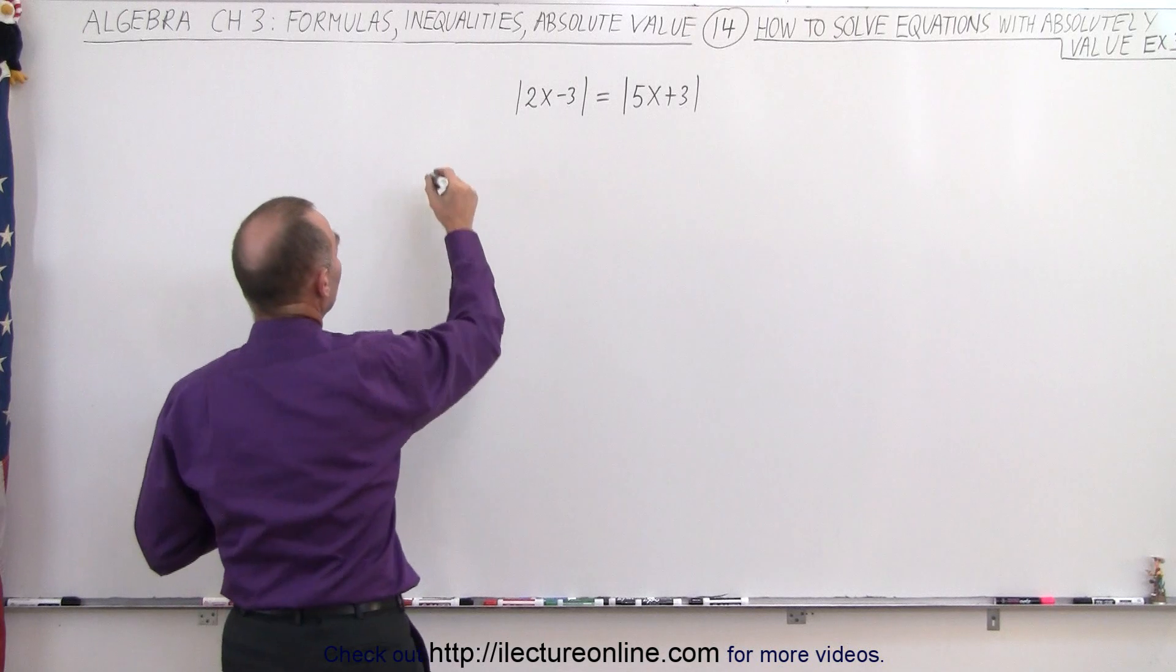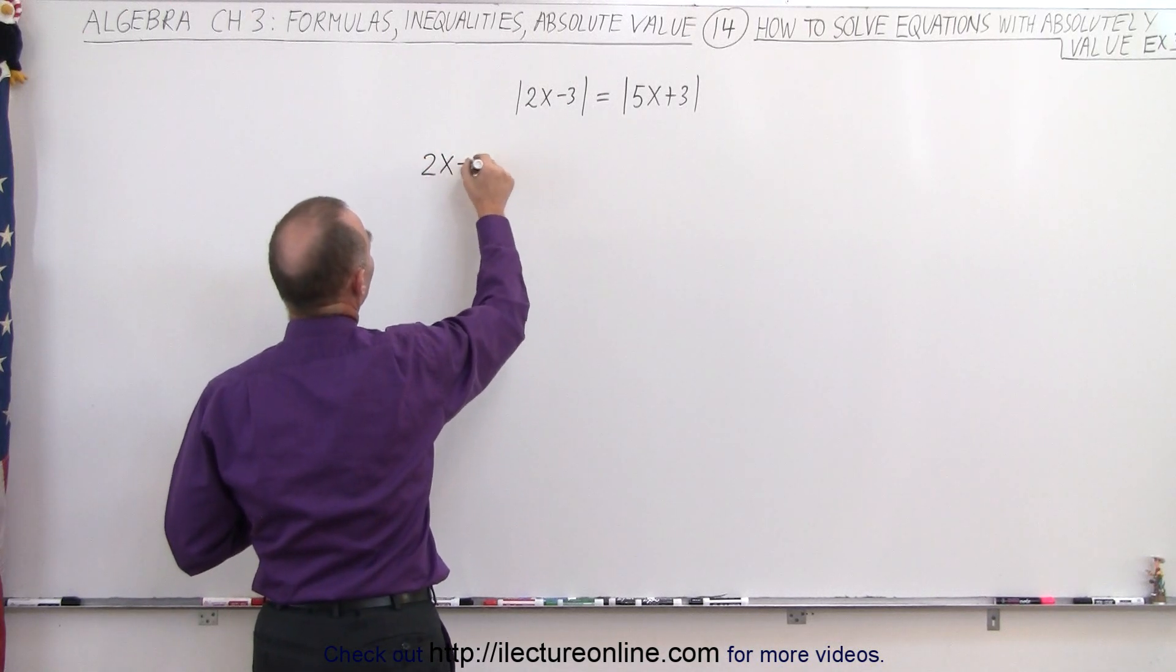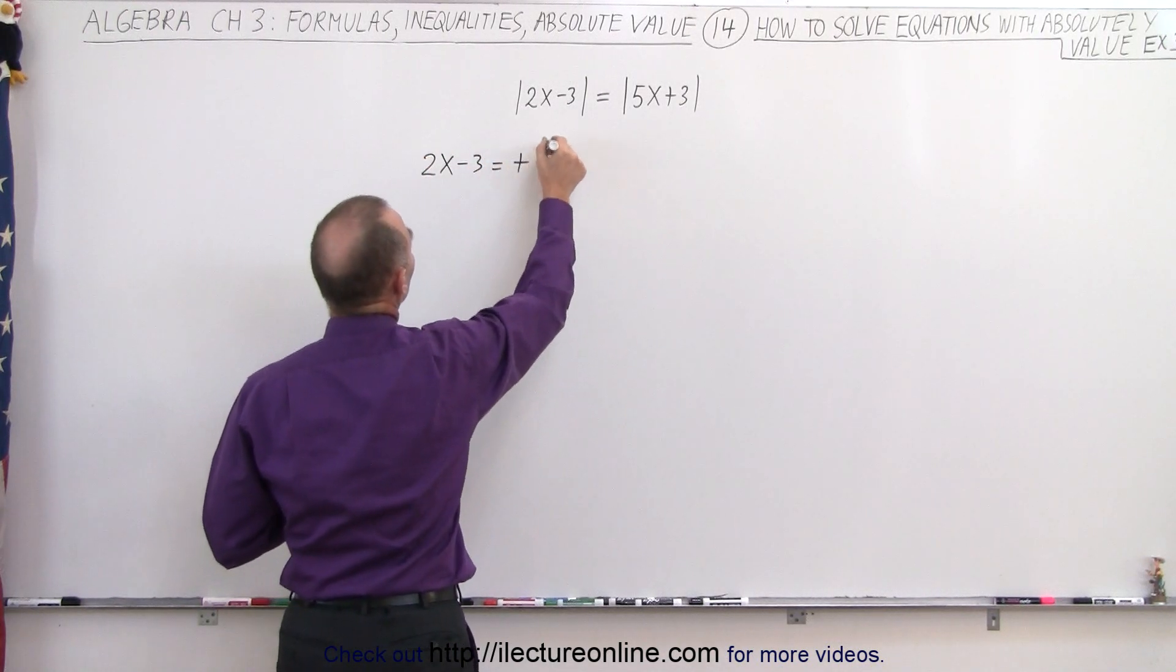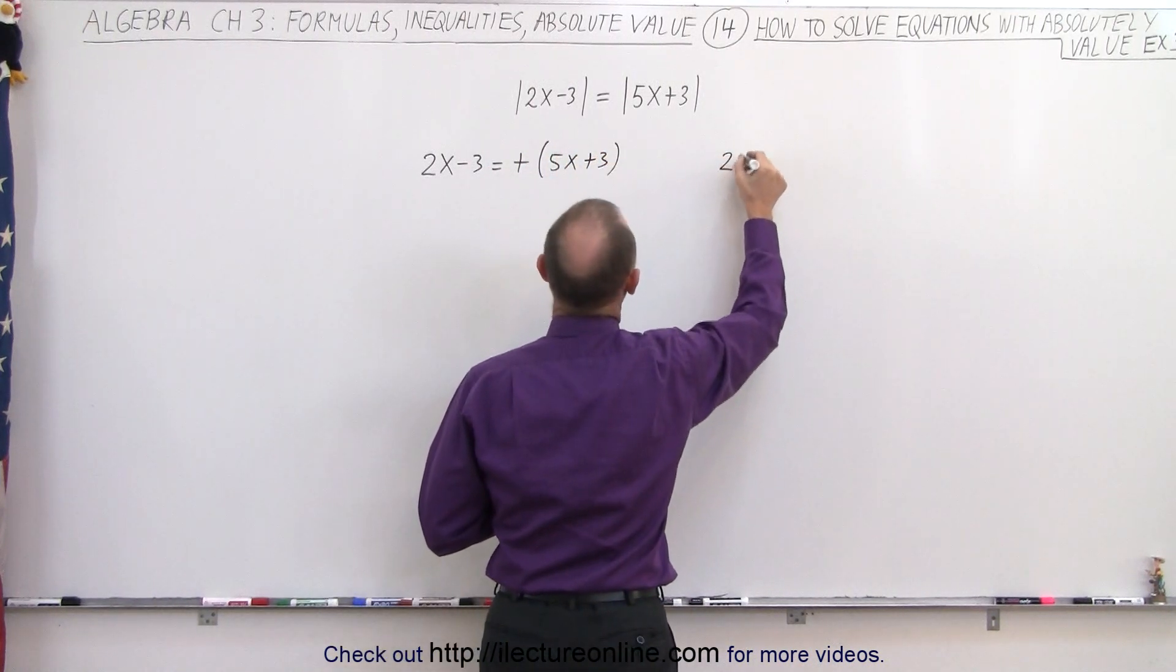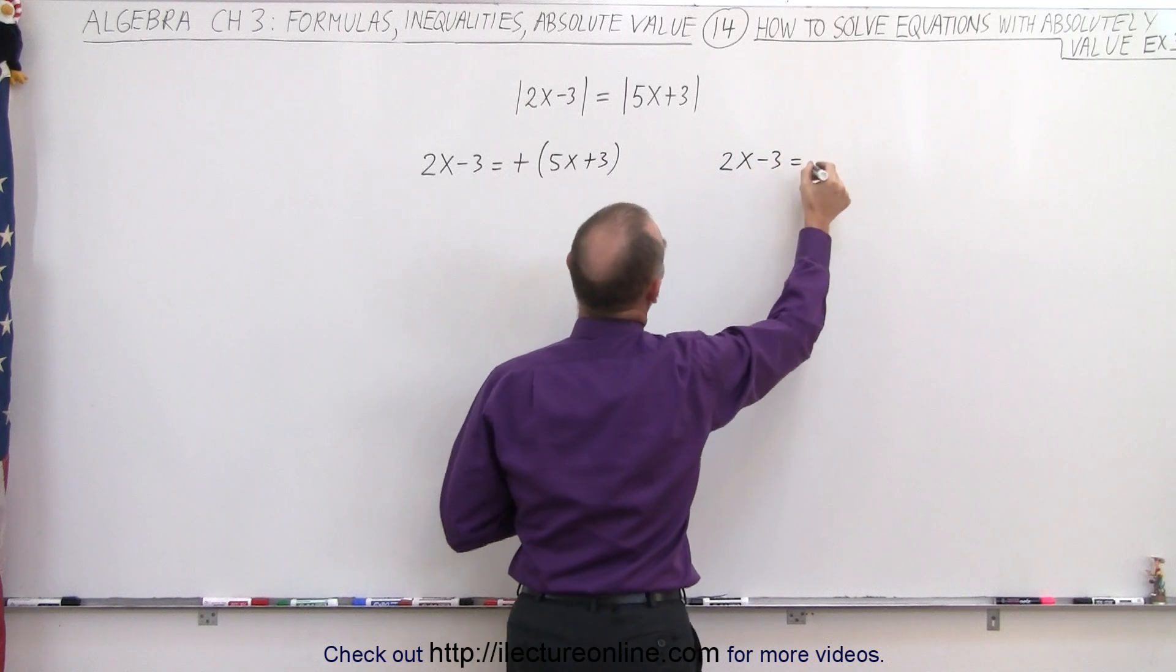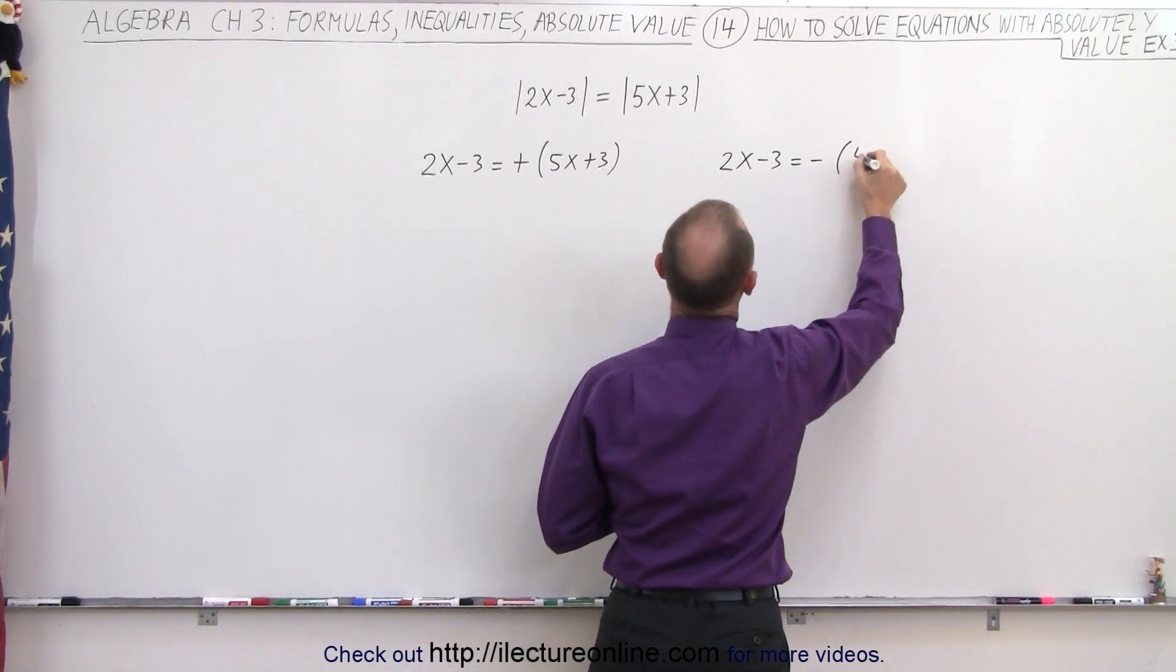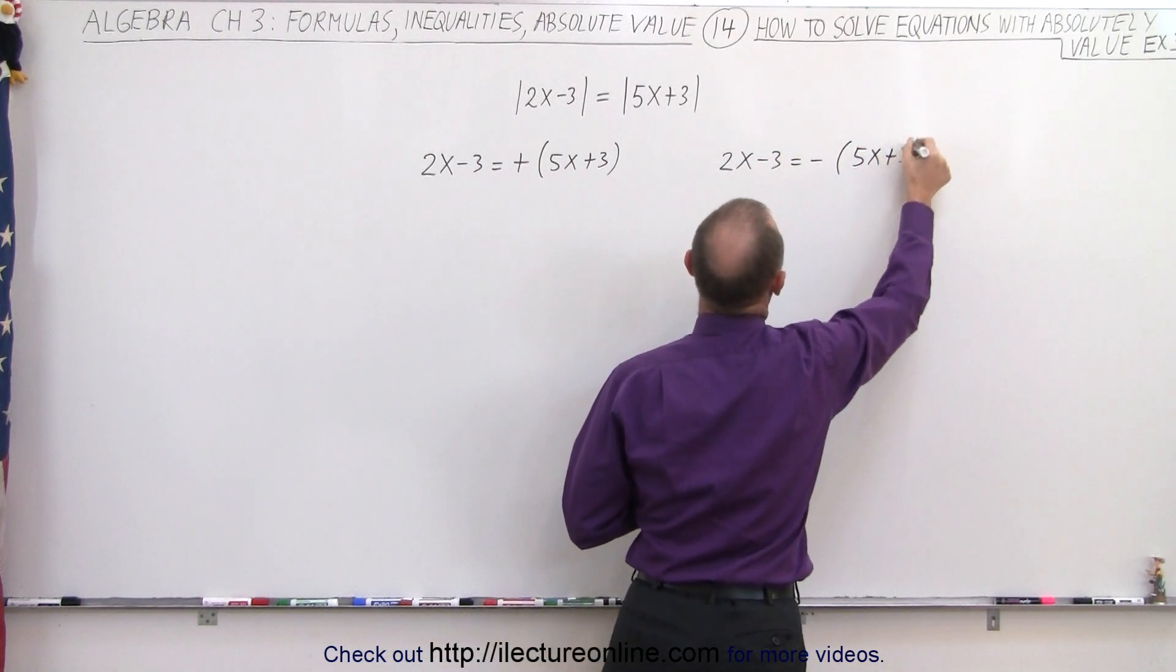So that means we can write that 2x minus 3 is equal to the positive of 5x plus 3, and we can also say that 2x minus 3 is going to be equal to the negative of 5x plus 3.